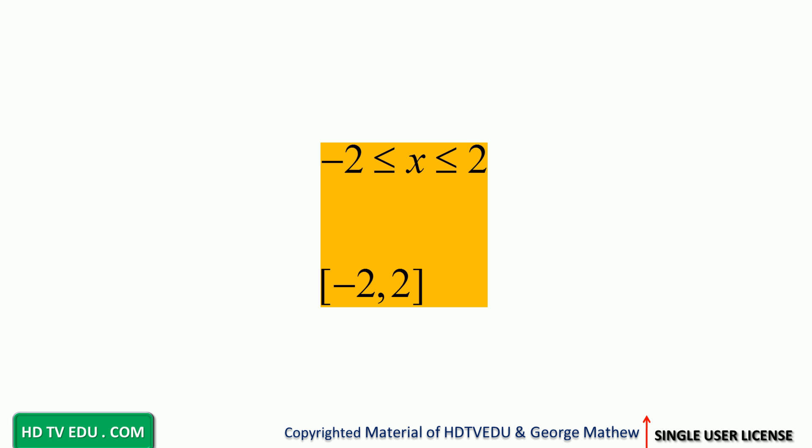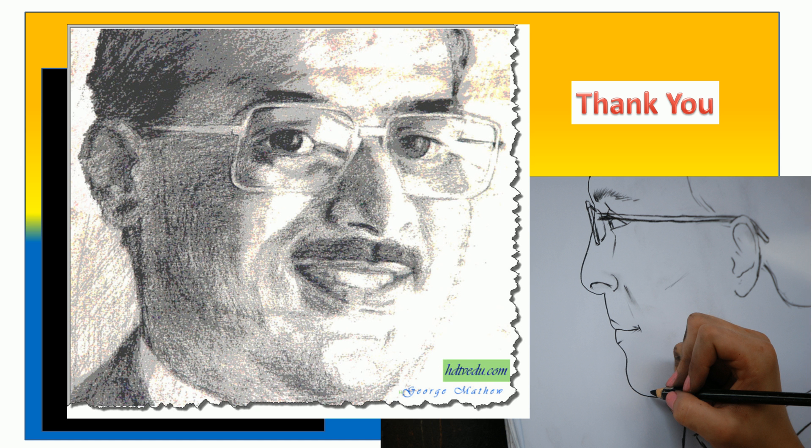Negative two is included, positive two is included. So in interval notation that means: square bracket negative two comma positive two square bracket. This is George Matthew signing off — good luck.